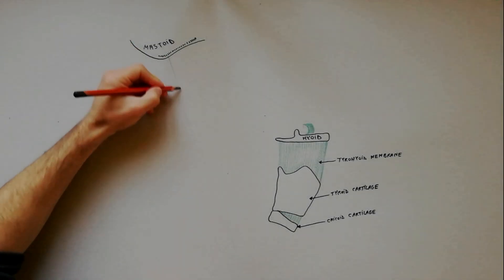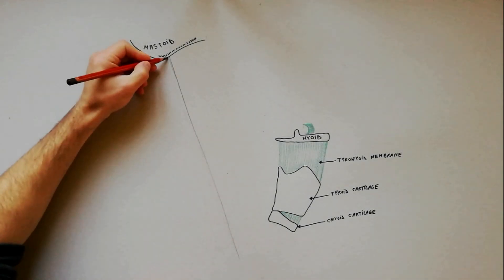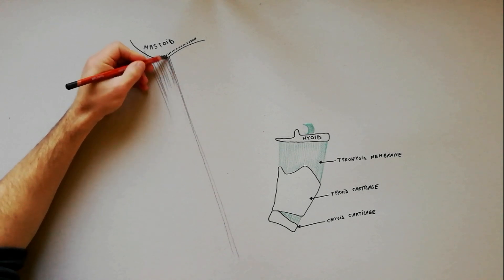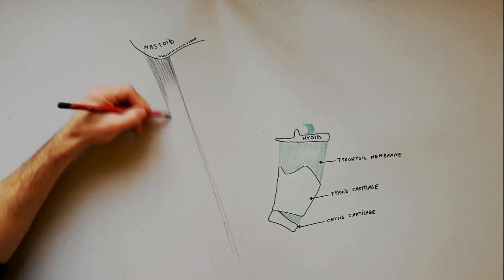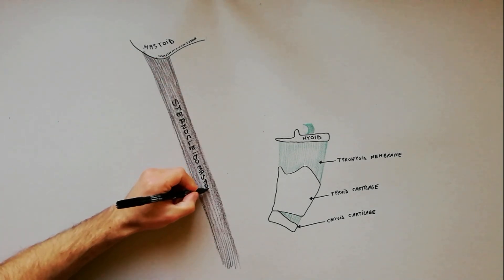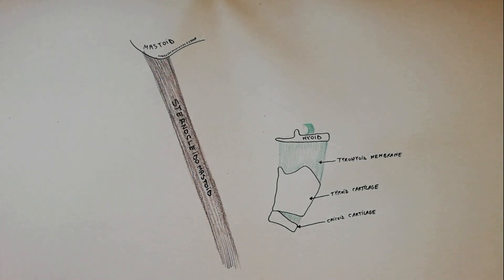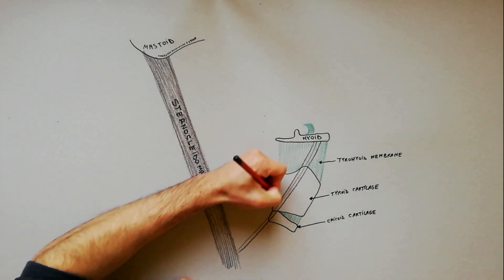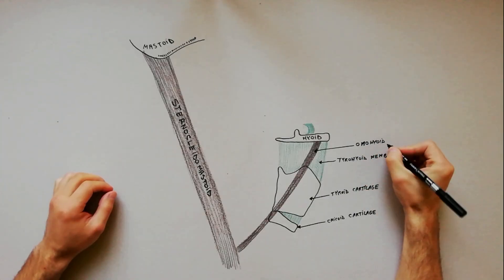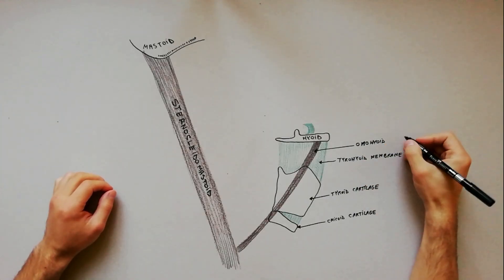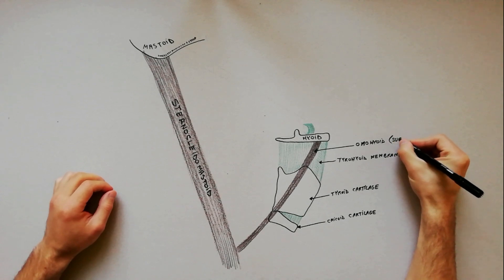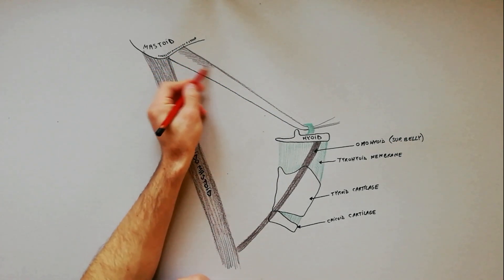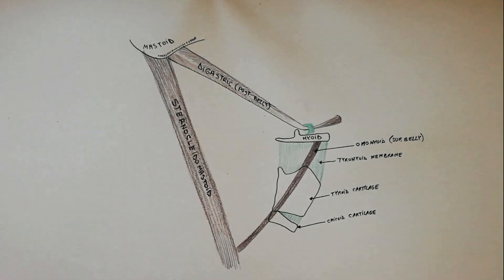The carotid triangle is a portion of the anterior triangle of the neck. It is bounded posteriorly by the anterior border of sternocleidomastoid, anteroinferiorly by the superior belly of the omohyoid, and superiorly by the posterior belly of the digastric muscle.